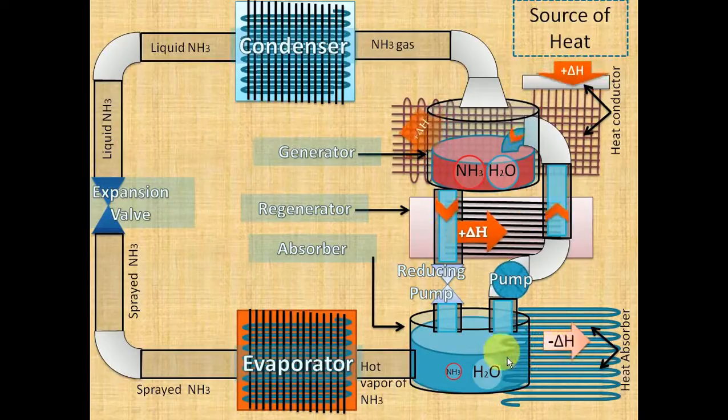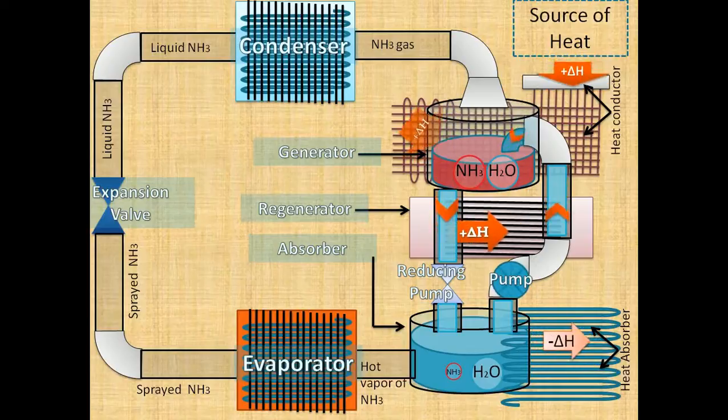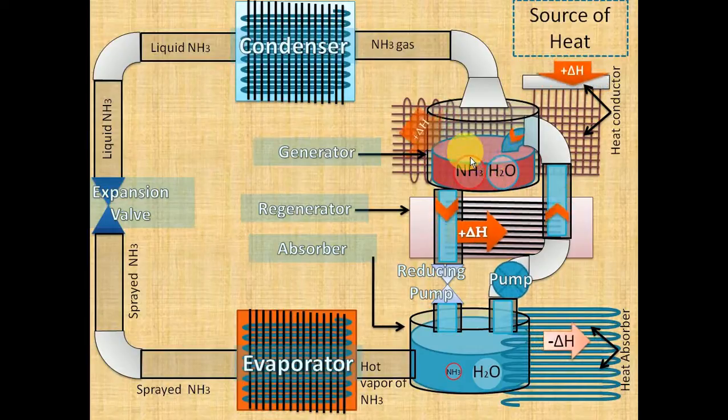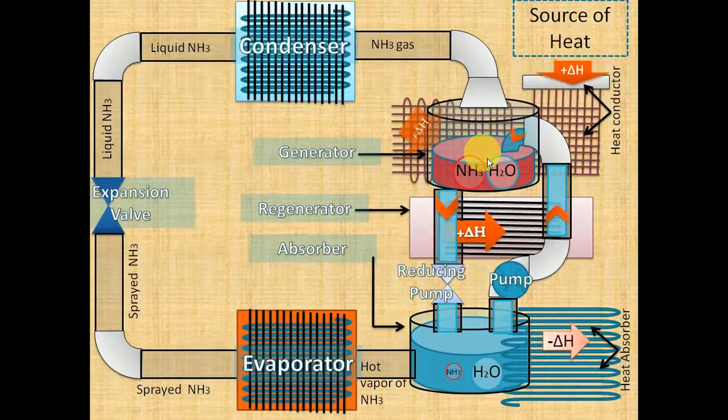From the absorber to the heat absorber. The cycle is not started yet. It will start after the separation of ammonia from the solution in the generator. If the solution in the generator gains minimum separating heat energy, the cycle will be started. Let's start the cycle.